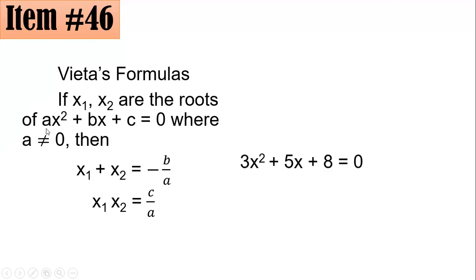Since we have 3x squared plus 5x plus 8 equals 0, and we are looking for the sum of the roots, so that's negative b over a, our b here is 5, and our a here is 3. So by substitution, that's negative 5 over 3, and that's letter A.